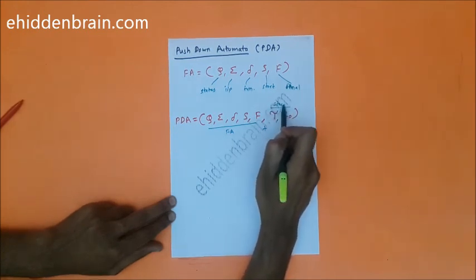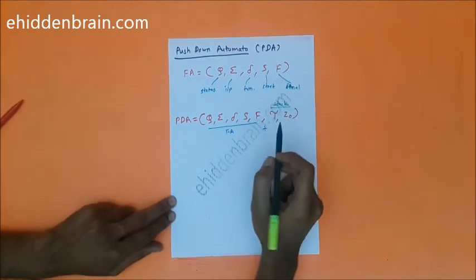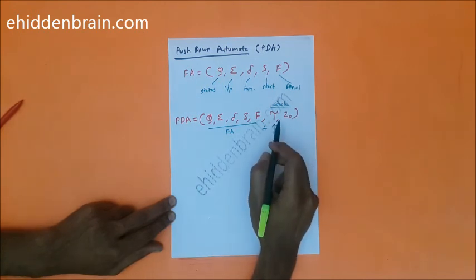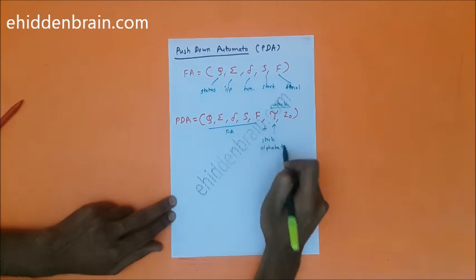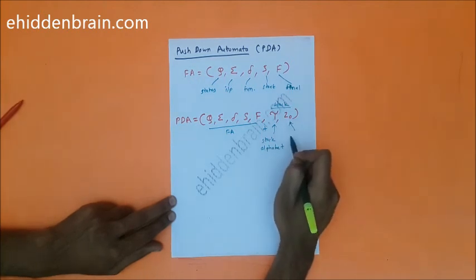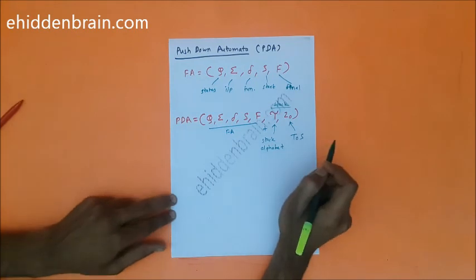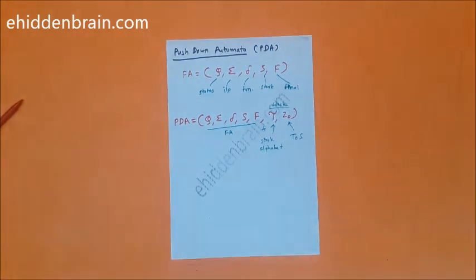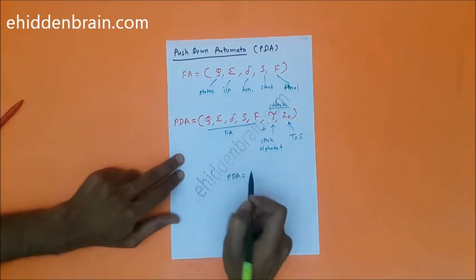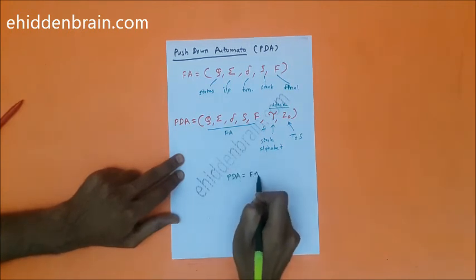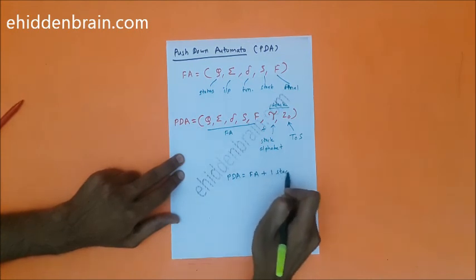The two additional components belong to the stack. One is called tau, which is the stack alphabet, and the second is z0, which is the initial top of the stack, also referred to as top of stack. So pushdown automata equals finite automata plus one stack.